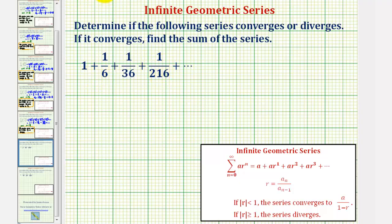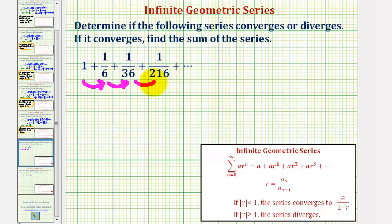Notice how if we start with the first term, we'd have to multiply by 1/6 to get the second term. If we multiply by 1/6 again, we get the third term, and again for the fourth term. Because the pattern is that we multiply by 1/6 each time, the common ratio R equals 1/6.